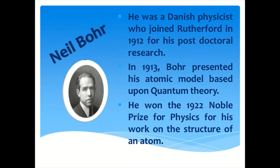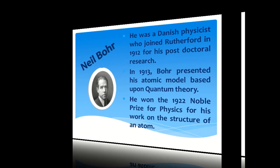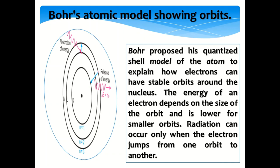Bohr's atomic model showing orbits. Bohr proposed his quantized shell model of the atom to explain how electrons can have stable orbits around the nucleus. The energy of an electron depends on the size of the orbit and is lower for smaller orbits. Radiation can occur only when the electron jumps from one orbit to another.